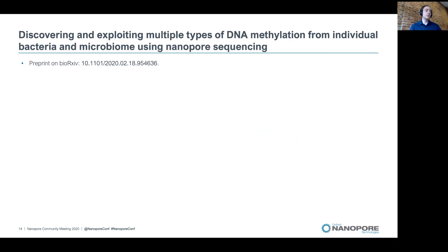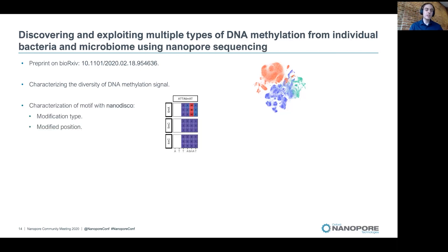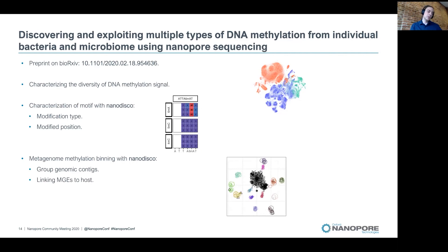To conclude, NanoDisco addresses motif typing and fine mapping as well as methylation binning. In this work, we characterized the diversity of DNA methylation signal, characterized motifs through NanoDisco by finding the modification type and the modified position within the motif, and provided a method for metagenomic methylation binning. This allows grouping genomic contigs, linking mobile genetic elements to their host, and also — not shown in this talk — identifying potential misassemblies.